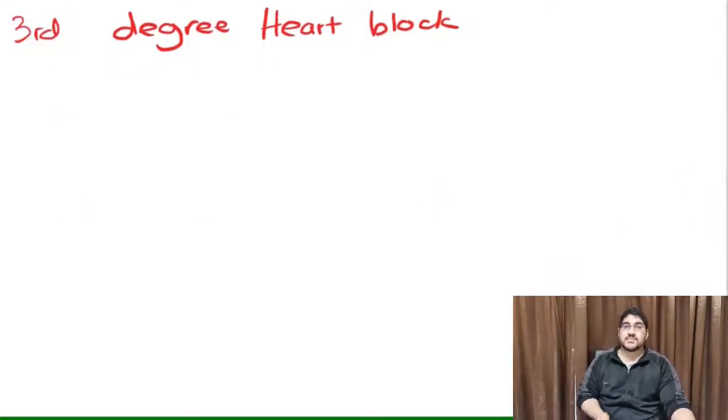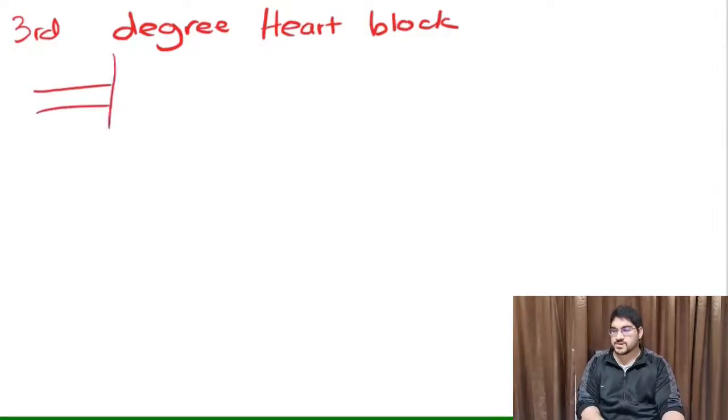What makes Mobitz type 2 heart block even more dangerous is that it can quickly go on to a third degree heart block. Now a third degree heart block is like a total separation. Here's your roadblock, here's your road. The cars on this side of the roadblock have no relation to the cars on this side of the roadblock. There's absolutely no relation.